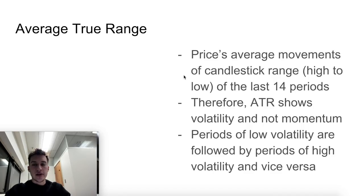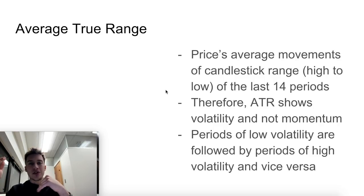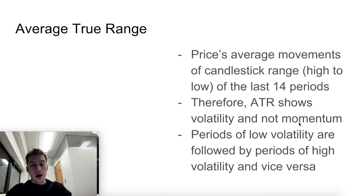The ATR is going to tell you the price's average movement — the candlestick range, meaning high to low of the last 14 periods — and this is going to be absolute value. It doesn't matter if the market goes down or up; both are indicators of high volatility. If the market goes very down and then very up, that's going to be very large volatility, added together using absolute value. So the ATR shows you market volatility, not momentum. RSI, MFI, and MACD tell you momentum, but they don't tell you market volatility as clearly as ATR does.